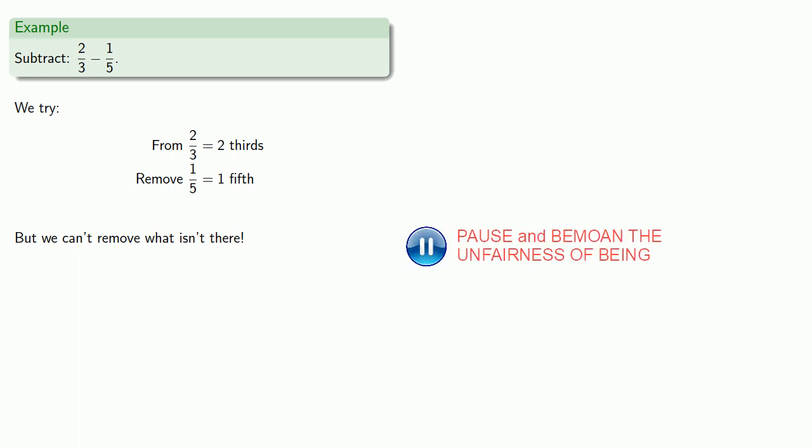Well, that worked out pretty well, let's try this subtraction. So from two-thirds we'll remove one-fifth, but we can't remove what isn't there. And so as with addition, we need a common denominator.